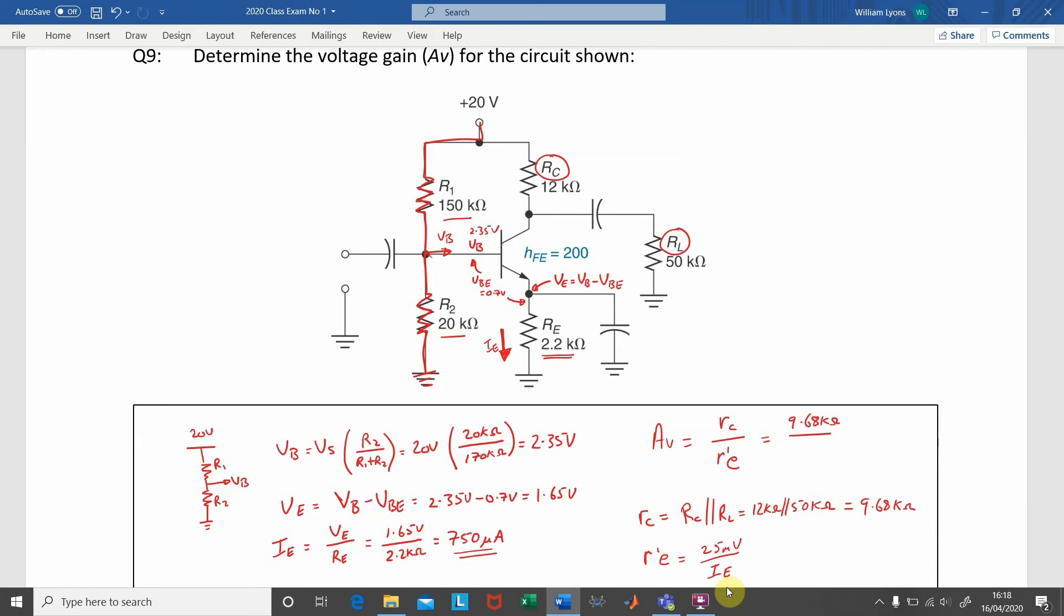We can now use this calculated value of IE to calculate our AC emitter resistance, R'E. So, plugging in the values, we have 25 millivolts divided by 750 microamps, and that gives us an overall result of R'E of 33.3 ohms.